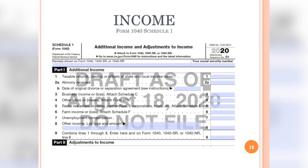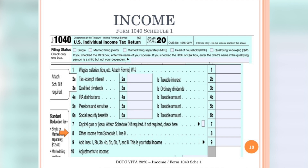Line 9 of Schedule 1 combines Lines 1 through 8, then drops that total amount to Form 1040, Line 8. We have taken care of all of the income items. Now it's time to move on to Line 10, Adjustments, giving us another opportunity to look at Schedule 1. See you in the Adjustments section.